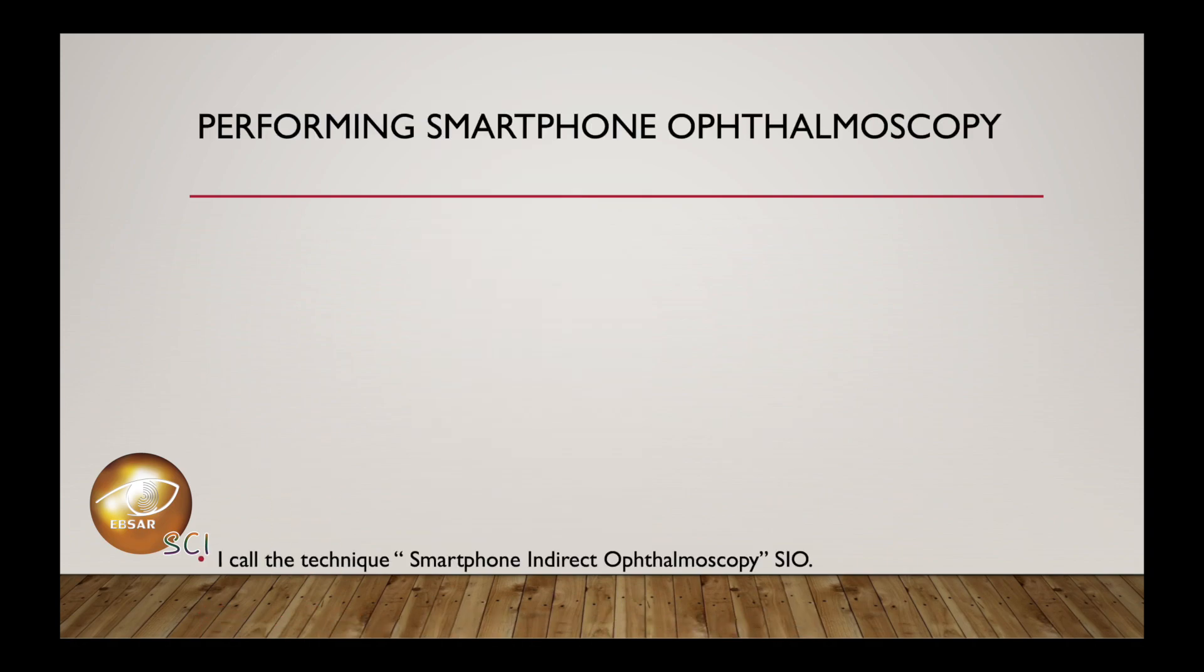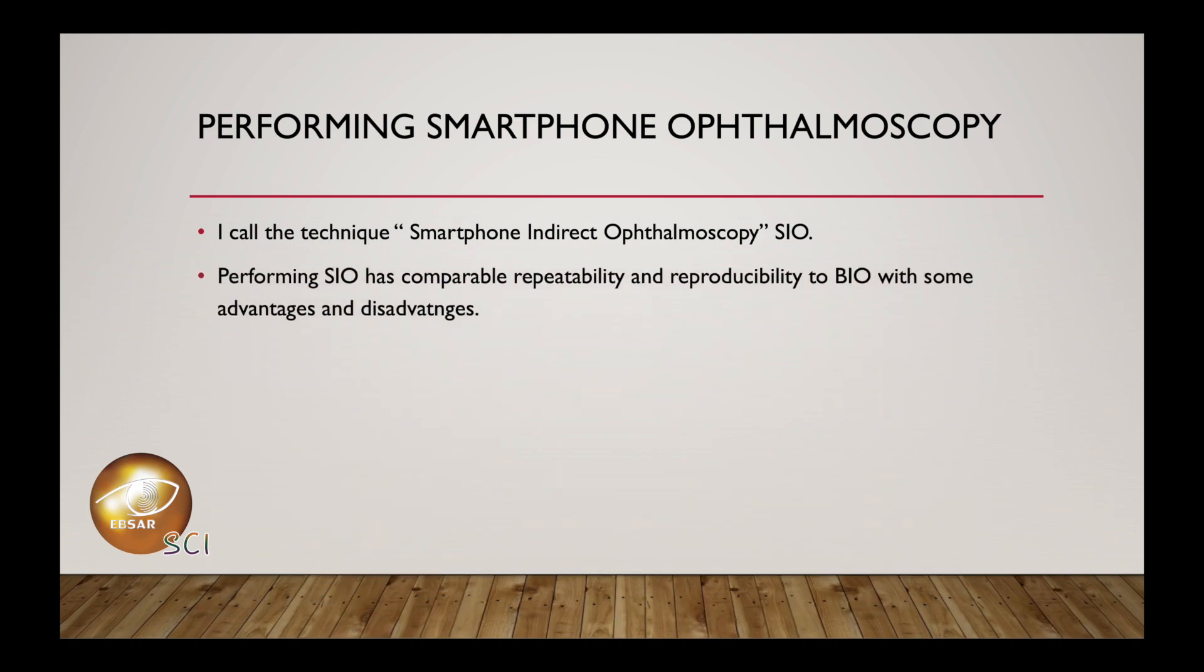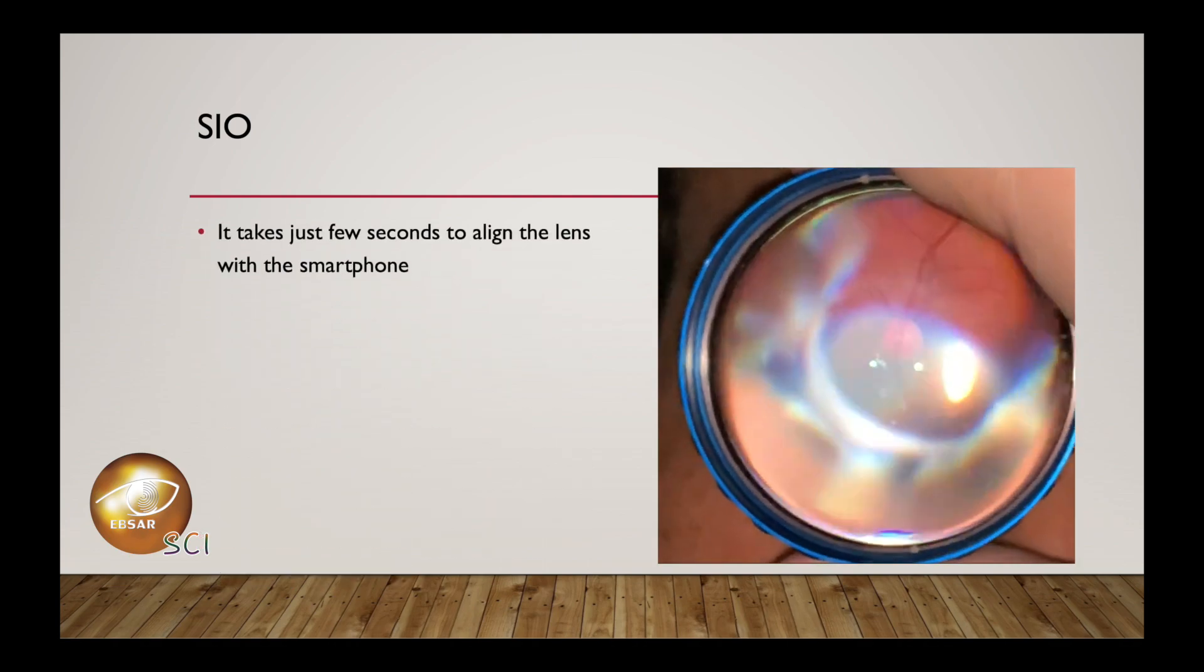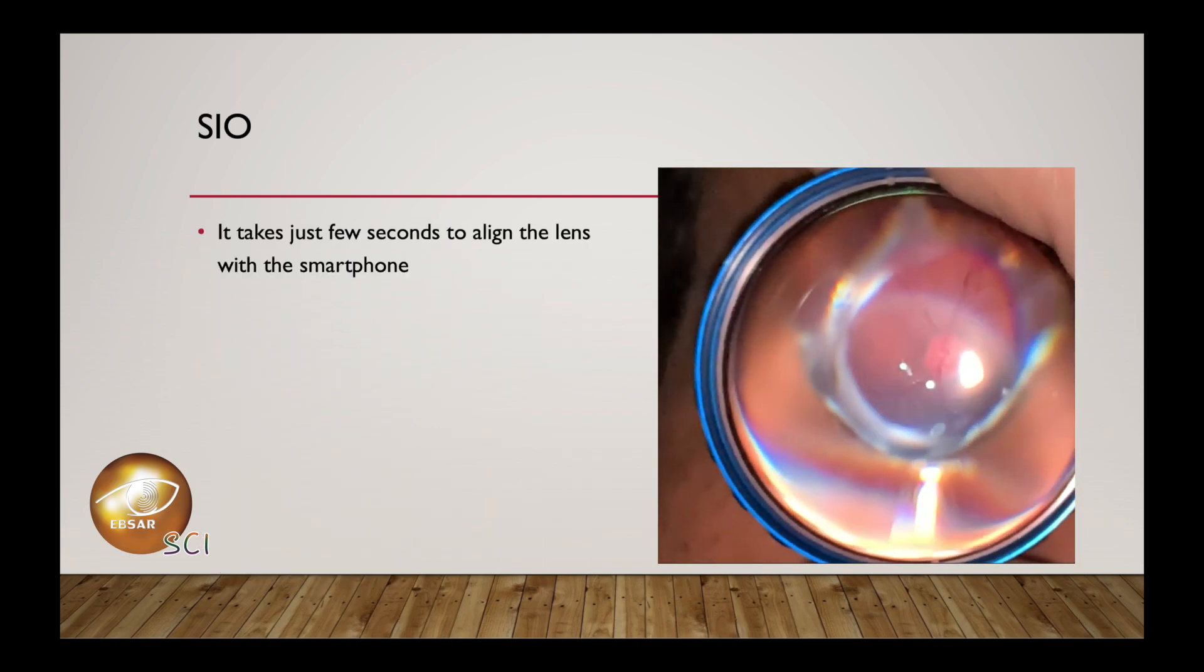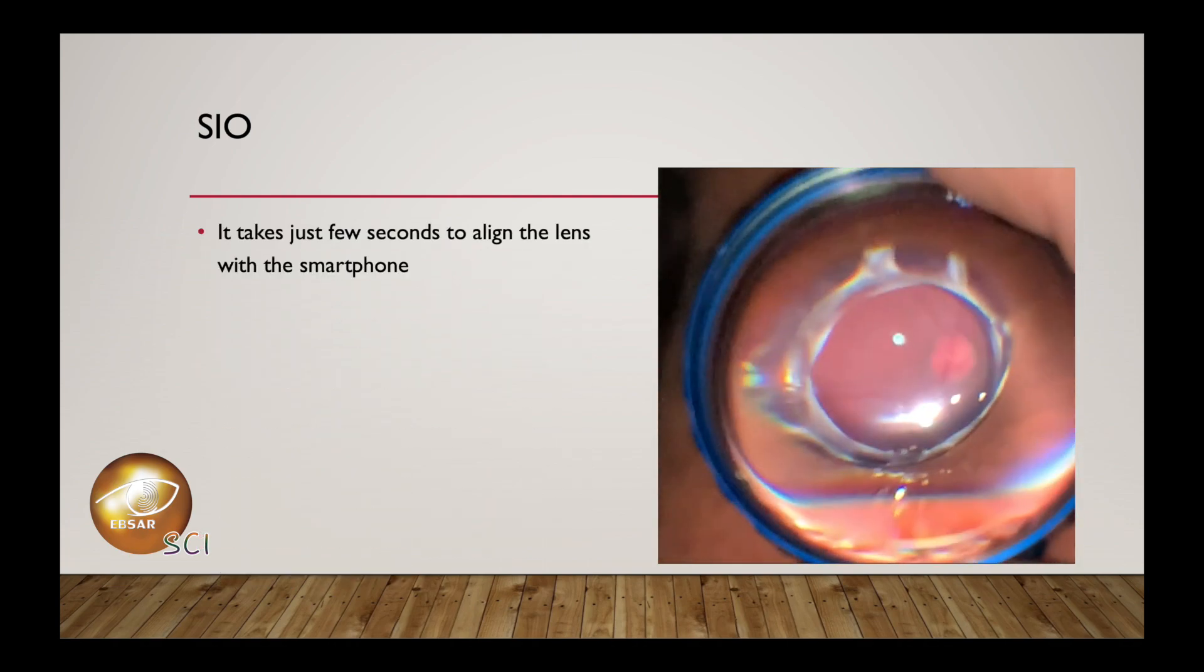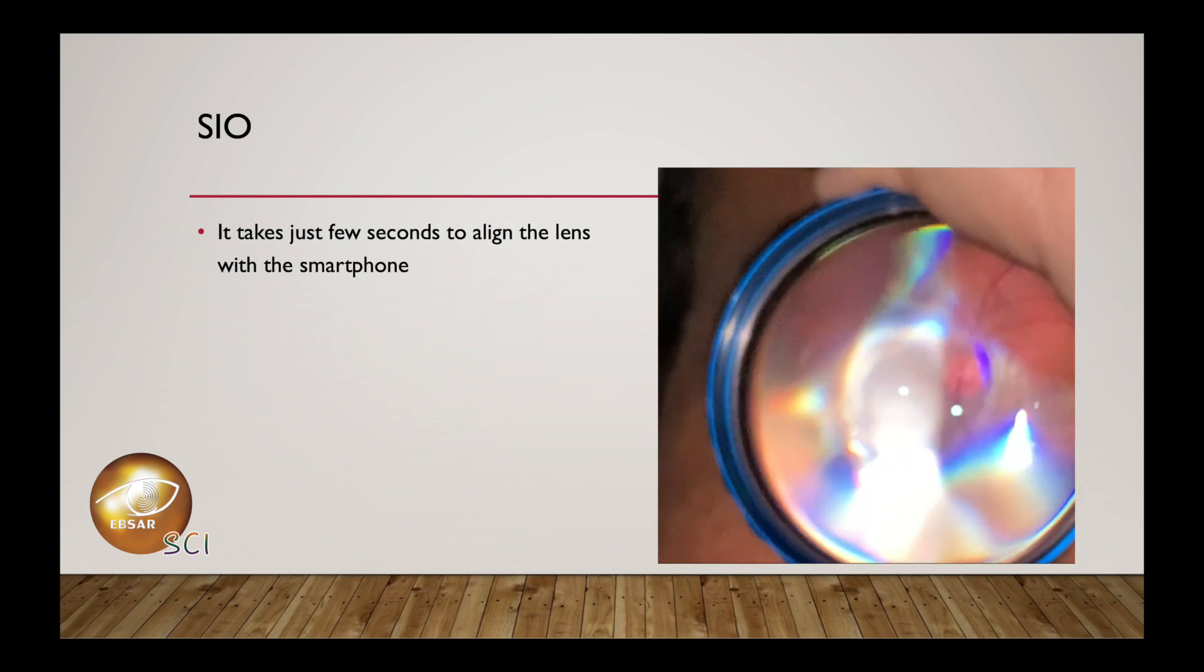I call this technique smartphone indirect ophthalmoscopy. Performing smartphone indirect ophthalmoscopy has comparable reliability and reproducibility to binocular indirect ophthalmoscopy with some advantages and disadvantages. It takes just a few seconds to align the lens with the smartphone. Once they are aligned with the proper distance apart, a clear image is visible.